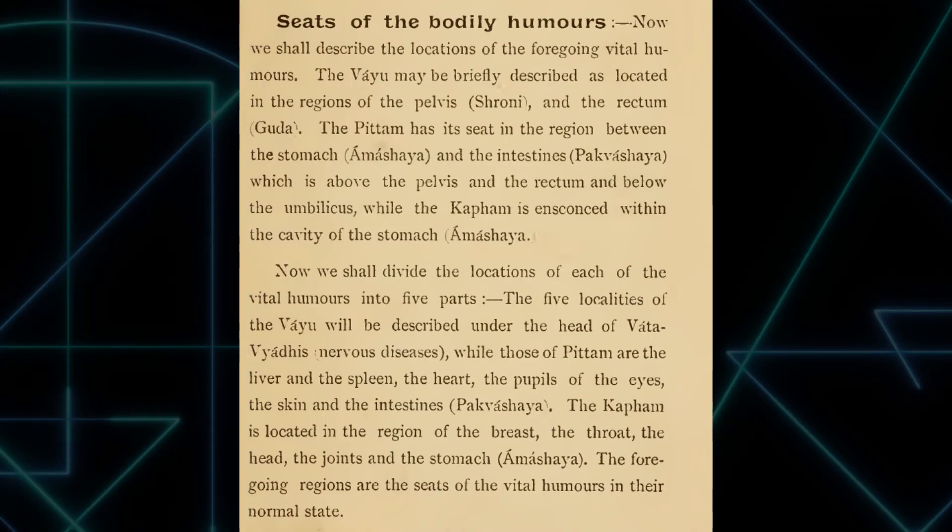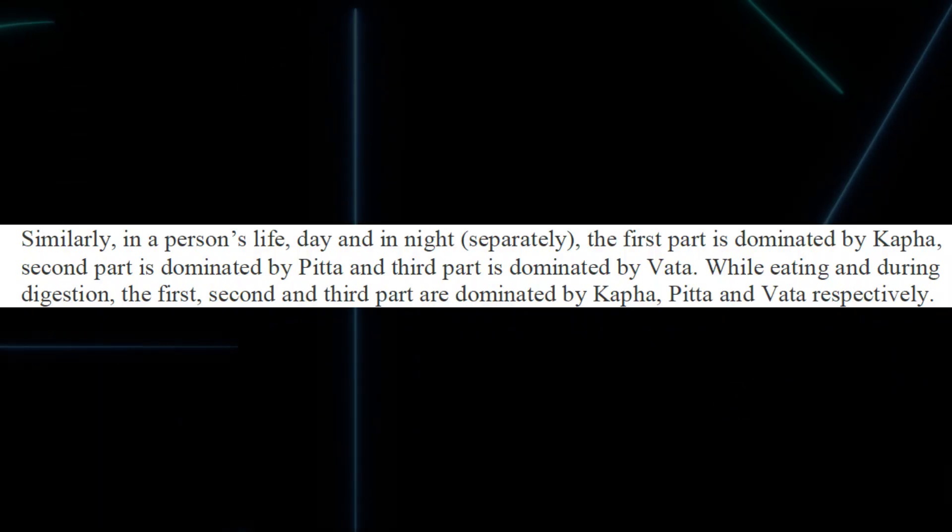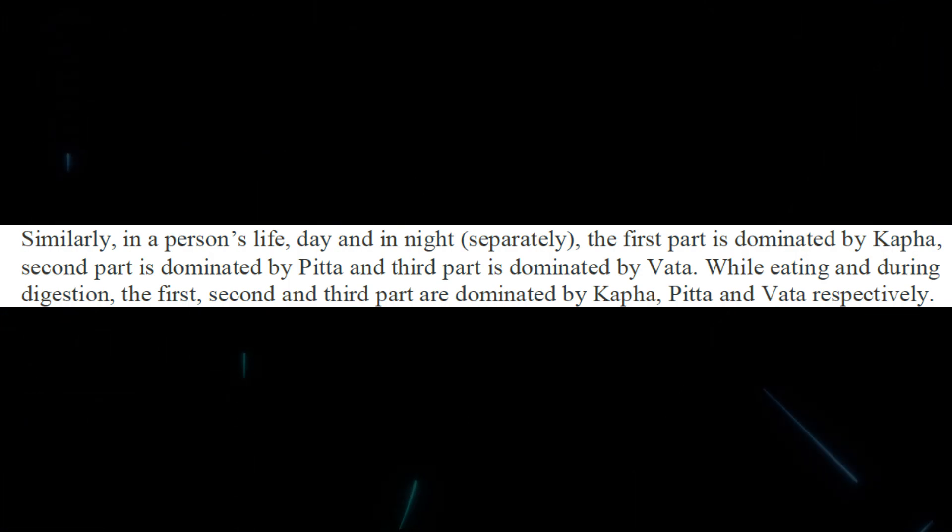The texts say the doshas are distributed all over the body but also concentrated in specific areas. If you divide the body into three parts, the top part up to the chest is dominated by Kapha Dosha; between the chest and the umbilicus is dominated by Pitta; below the umbilicus is dominated by Vata. They have also divided the day into times when each dosha is dominant. They detail in length how each one looks, feels and even tastes — but the irony is that no one has ever seen, felt or tasted them, simply because they never existed.